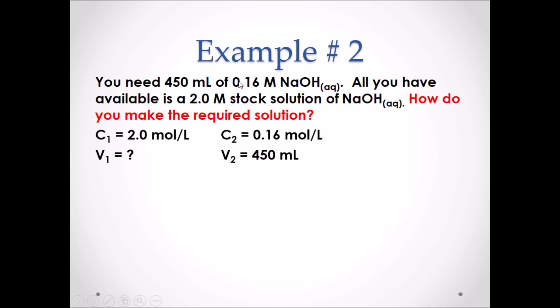If we look at the values that are provided to us, we have the initial concentration of the stock solution, and we know we need to make a solution with a concentration of 0.16 moles per liter, and we need a total of 450 milliliters of that new solution. As a result, we need to find the volume of the stock solution required to make the new diluted solution. We can then rearrange our dilution formula to V1 equals C2 times V2 divided by C1.